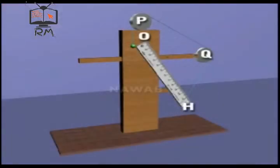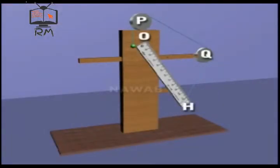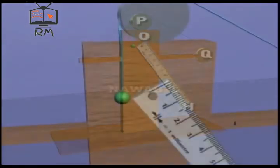Connect a piece of thread with the hook H and pass it over the two pulleys. Attach a metallic bob at the other end of the thread and note its initial position A on the scale.